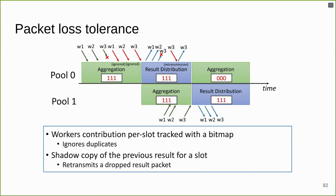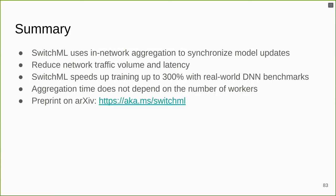Regarding packet loss tolerance: at the aggregation stage, duplications are ignored and default cases are detected. When results are disseminated, if a worker has not received the result it resends the inquiry, so the system is a two-way street. Both SHARP and SwitchML are described by multiple resources, they are open source, and the presentation will be available online.